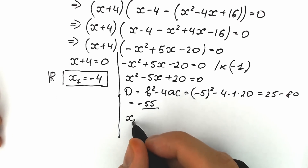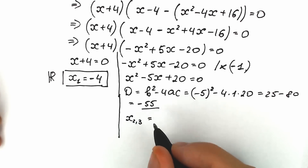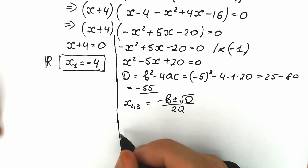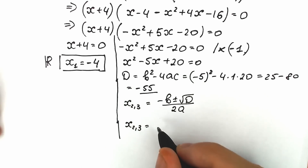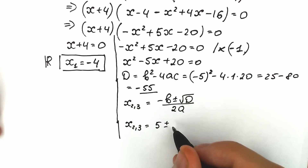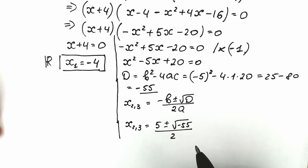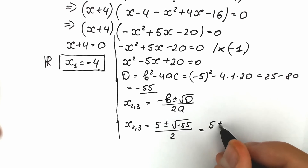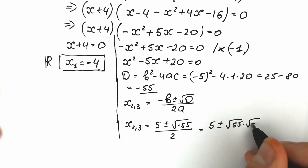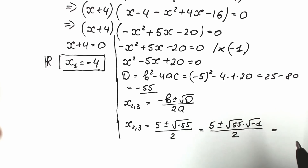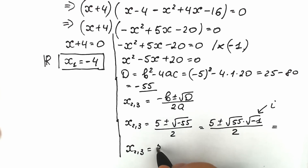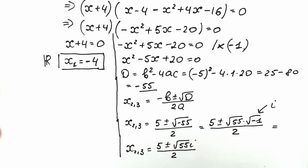Let's find the complex roots. x₂ and x₃ equal (minus b ± √D) / 2a, which gives us (5 ± √(minus 55)) / 2. We express minus 55 as minus 1 times 55, so √(minus 55) equals √55 times √(minus 1) equals √55 times i. Therefore x₂ and x₃ equal (5 ± √55 · i) / 2.